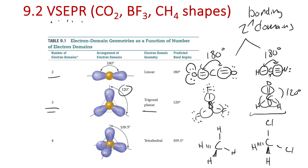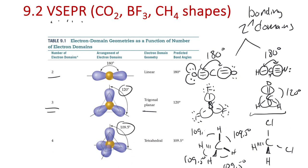If we have four domains, they're going to fit into a tetrahedral geometry where we have 109.5 degree bond angles. The way we can sketch this is with a central atom, two hydrogens in the plane of our paper, and then we wedge a hydrogen back and forward to show that all of these bonds are exactly 109.5 degrees.